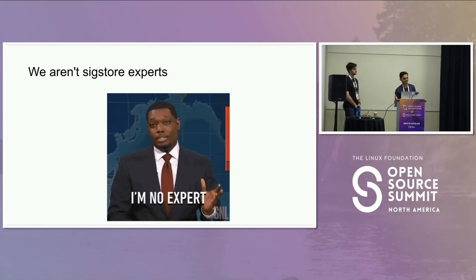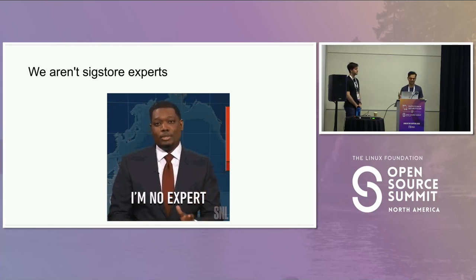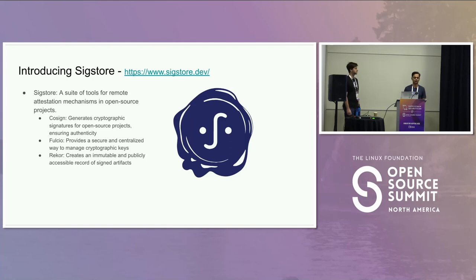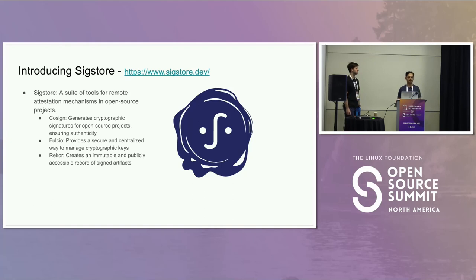We are not Sigstore experts — there are folks at this conference who are, but we want to set that context straight. Before we dive deep, we'll talk about the tools we're using. Sigstore is a set of tools for attestation mechanisms in open source projects. We're going to talk about specifically three tools today — those three tools that the Scorecard GitHub action uses.